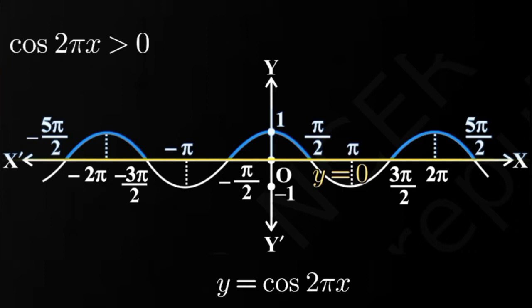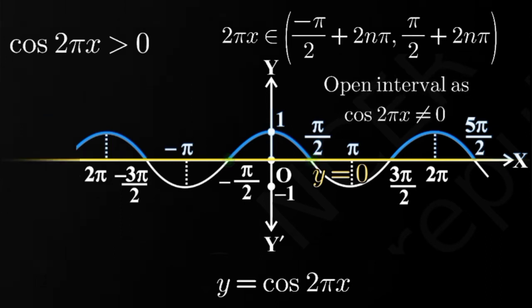So one observation we can make is that this is coming somewhere between two odd multiples of π by 2, right. But we cannot simply state this. Why am I saying this? Because you observe that the negative values are also coming between two odd multiples of π by 2. So let me fix these two angles minus π by 2 and π by 2. Now we will define the interval with respect to these angles. Now we already know that cos function repeats itself after every 2π interval. So I can basically say that for this inequality to be satisfied my angle which is 2πx must belong to the interval minus π by 2 plus 2nπ to π by 2 plus 2nπ in open braces where n belongs to an integral set.